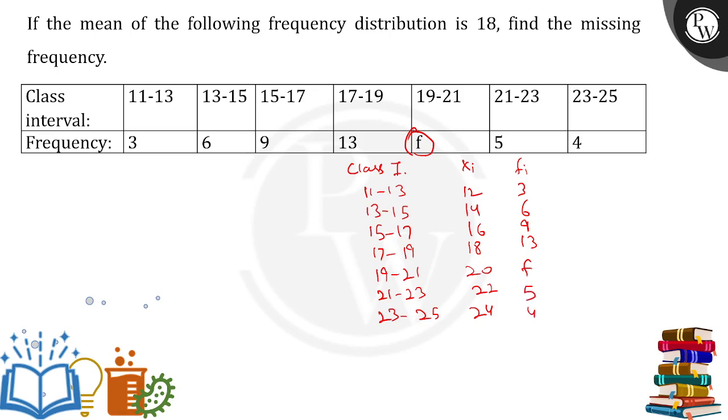Finally, we want one important thing which is fi xi for which we have to do the calculation. So after multiplying, these values will be coming out: 36, 84, 144, 234, 20f which is the missing value.